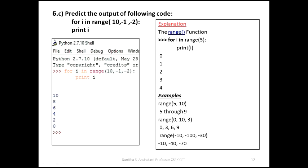Question 6c: Predict the output of the following code: for i in range 10 comma minus 1 comma minus 2 colon print i.